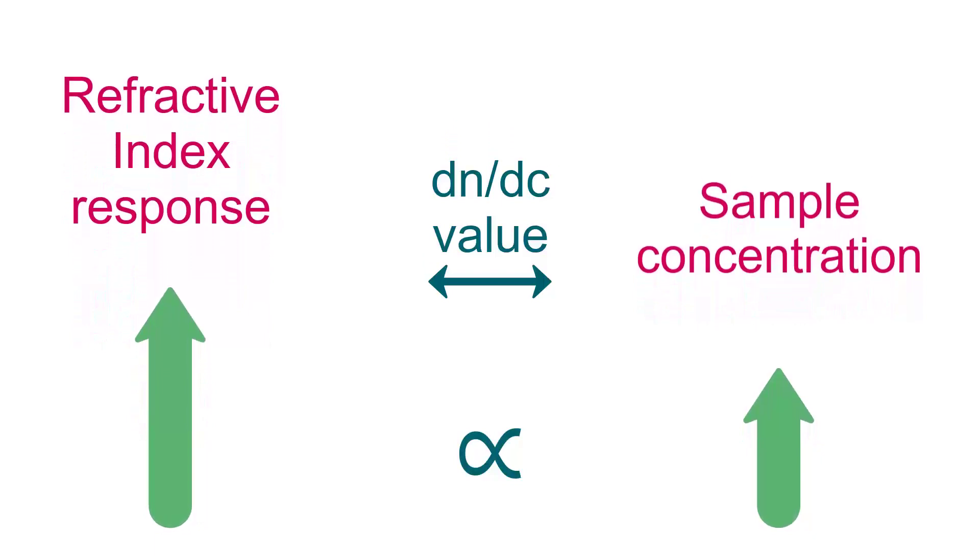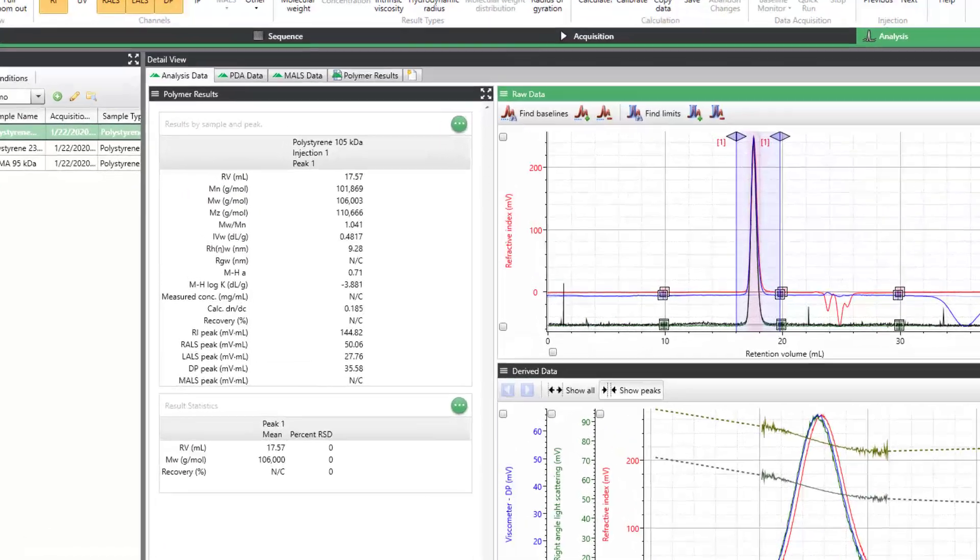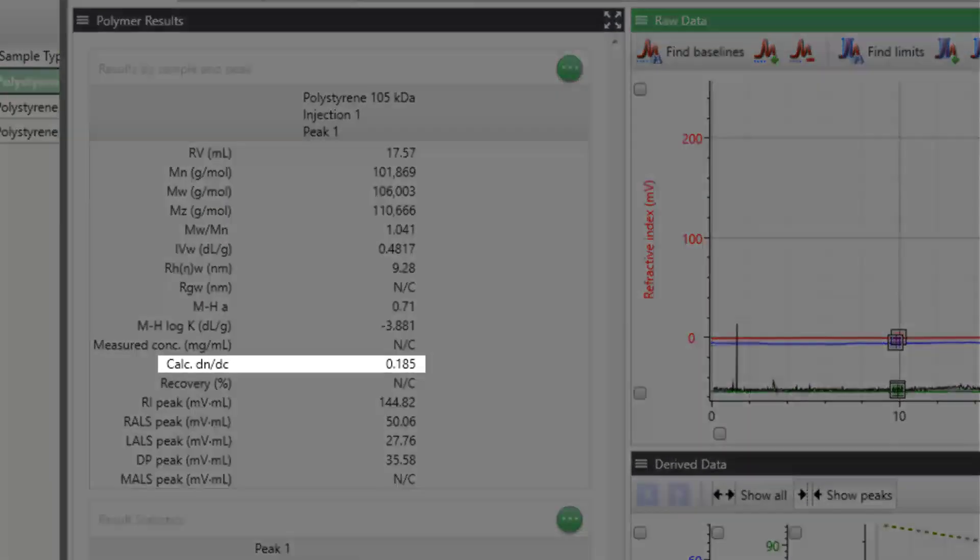As you can probably tell, knowing the DNDC value for your sample is critical to obtaining accurate results. Fortunately, the Omnisec software offers a method of determining DNDC values.